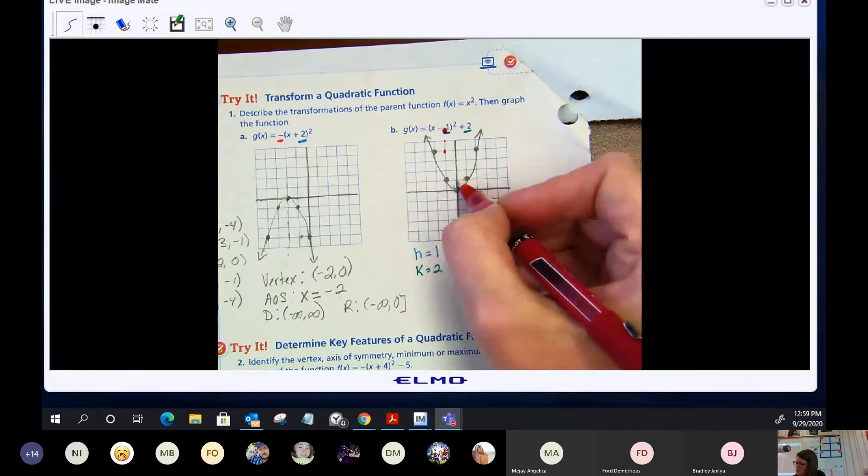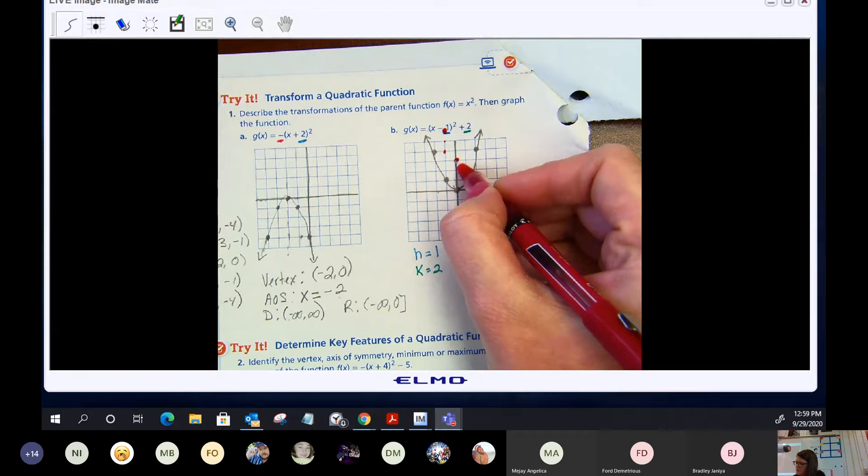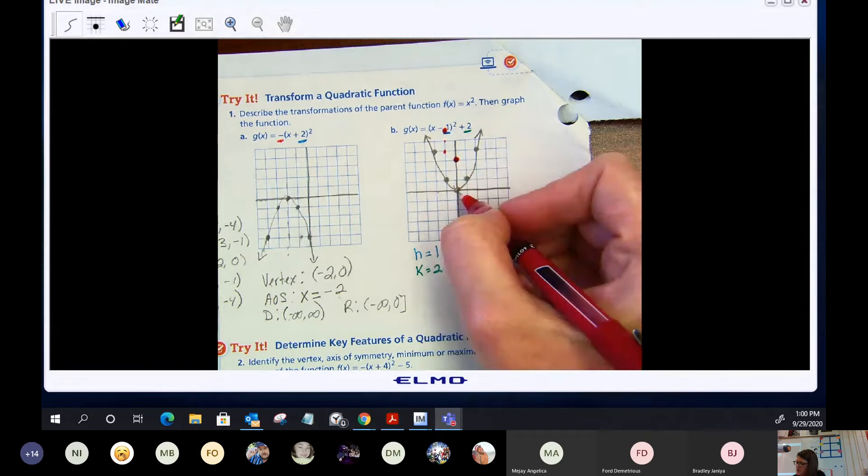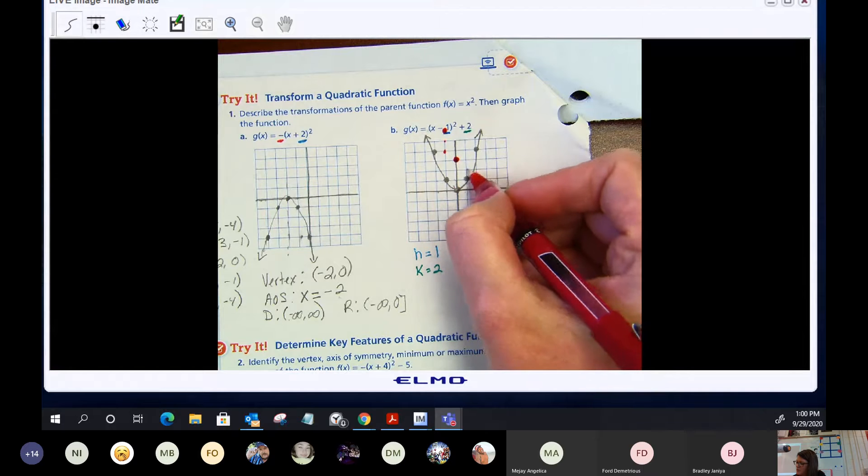Another point, come down here to the vertex. We're going to move the vertex. We go right one, up two.